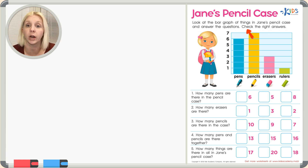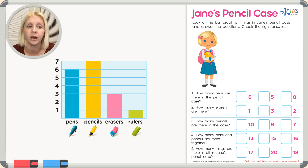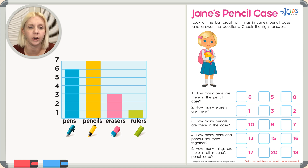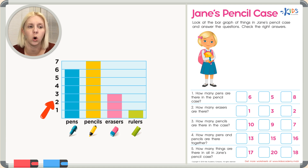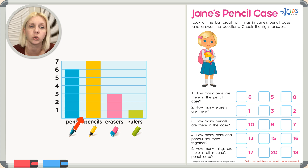So this is a bar graph. A bar graph is a graph that represents information. Let's look at both sides of this graph. The first side has numbers starting at one going all the way up to seven. Down here we have different categories: pens, pencils, erasers, and rulers. These are the things in Jane's pencil case, and the bars go up to different numbers.